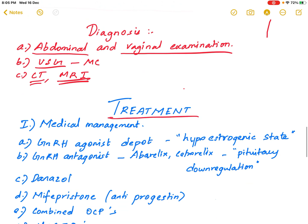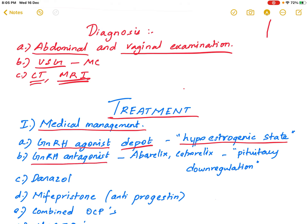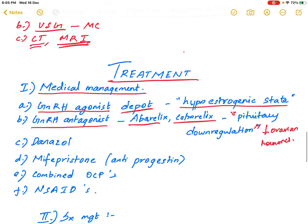For medical management, GnRH agonists in depot form produce a hypoestrogenic state that decreases fibroid size. GnRH antagonists like abarelix and cetrorelix cause pituitary down-regulation, thereby decreasing ovarian hormones and reducing fibroid size.